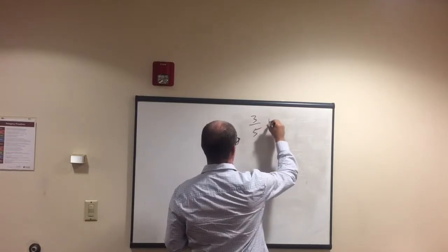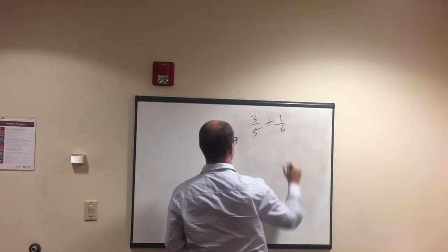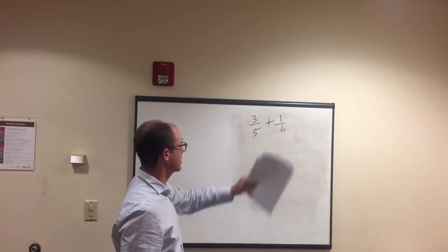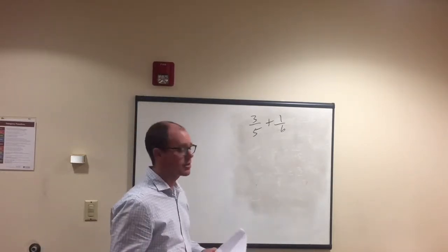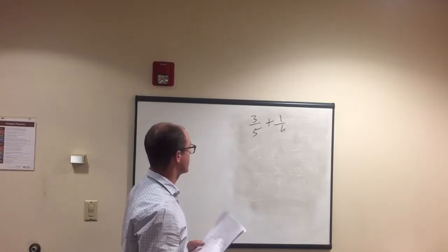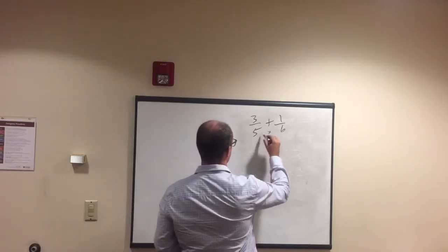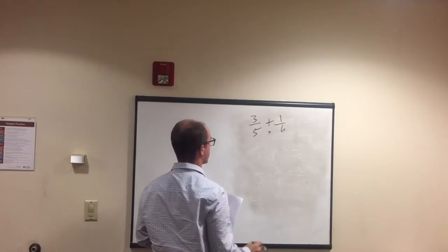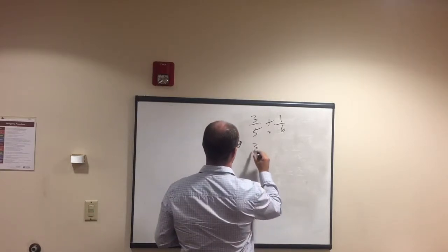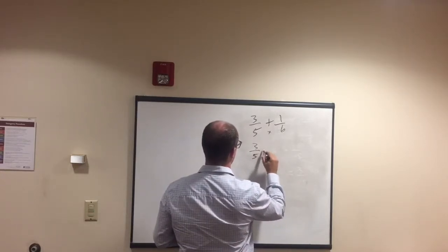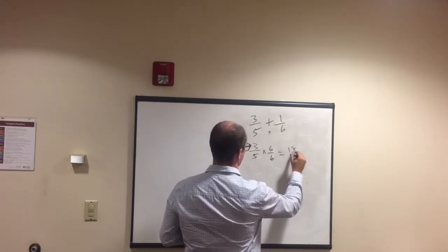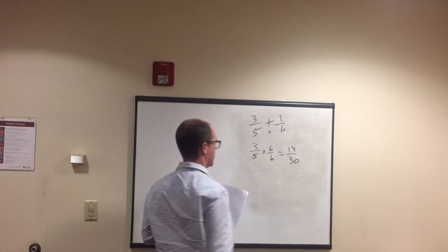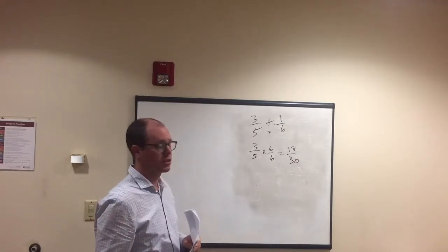Three fifths plus one sixth. Okay, same thing. Denominators are different, you can't add them like this. You can't add them in this format. So again, let's just go ahead and multiply 5 and 6 together. So denominator will be 30.